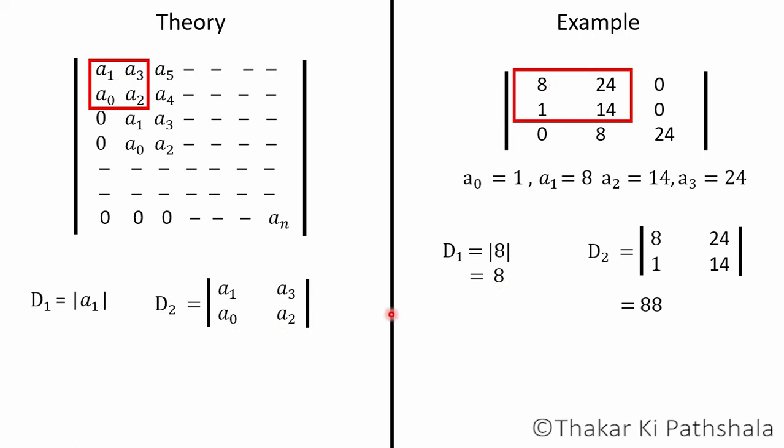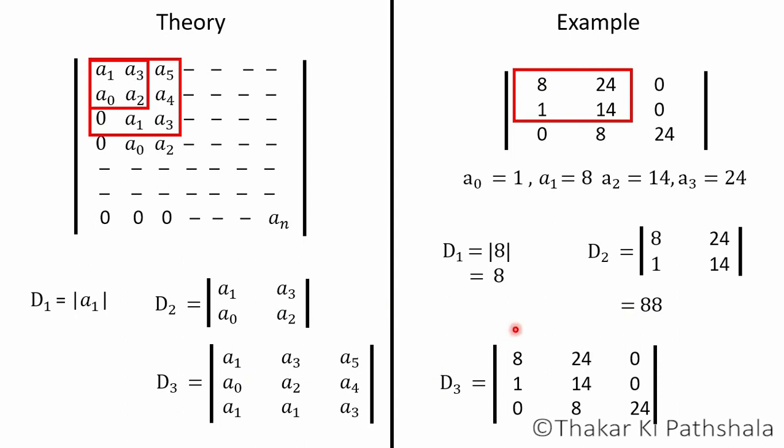D₃ is formulated with encircled quantities. Just expand previous determinant by one place. On both sides you will get a 3 by 3 determinant. For our example, the whole example is a 3 by 3 determinant. If we solve this, then we will get value of 1212.